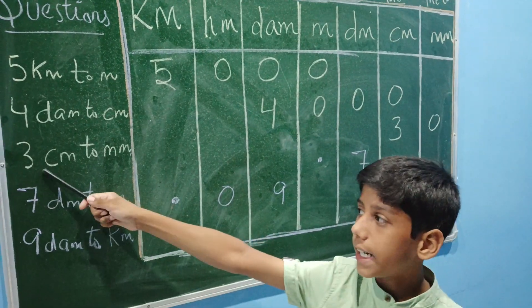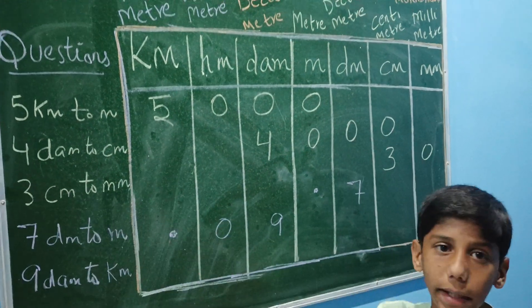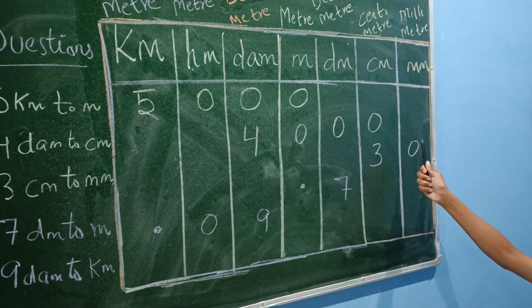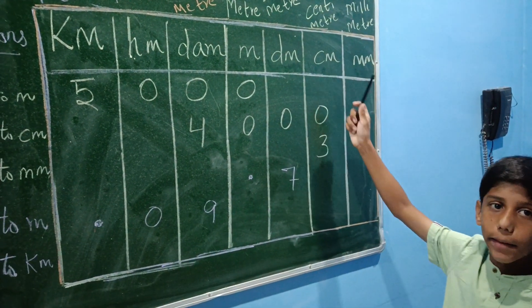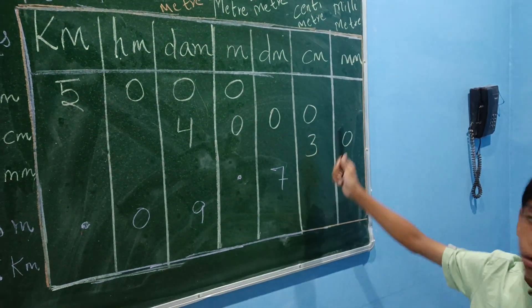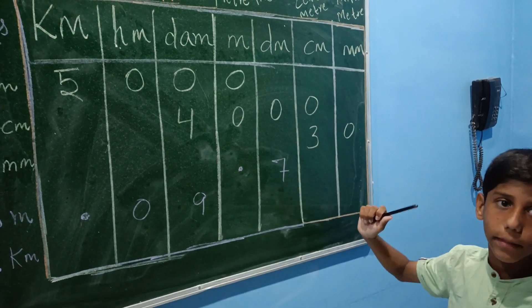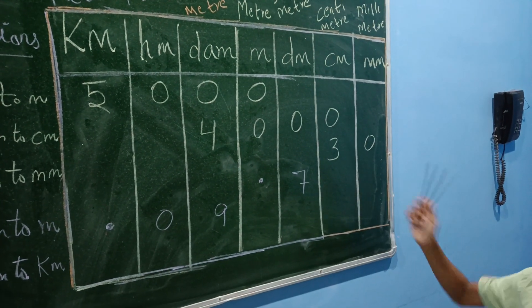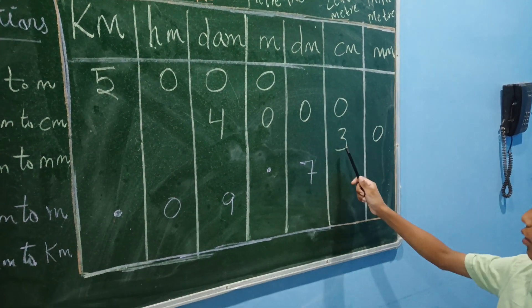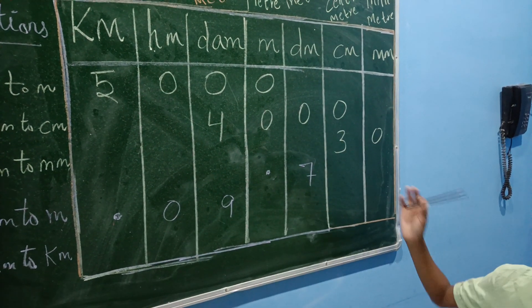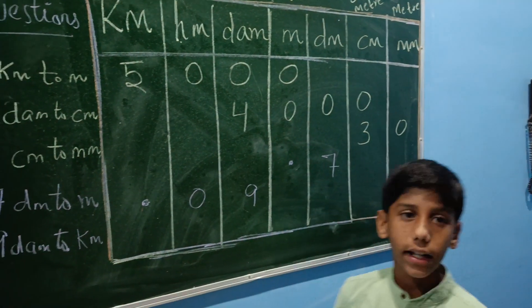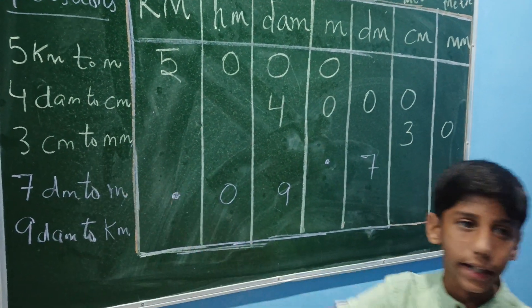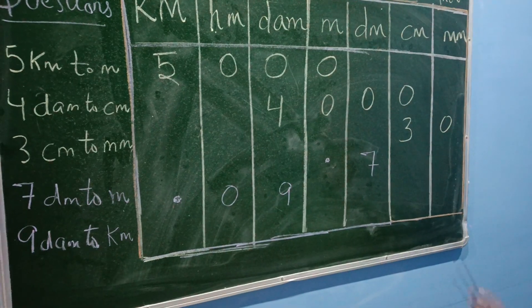Next: 3 centimeter to millimeter. Now we have to convert 3 centimeter to millimeter. So 3 centimeter to millimeter equals 30 millimeter.